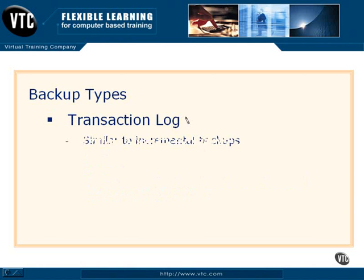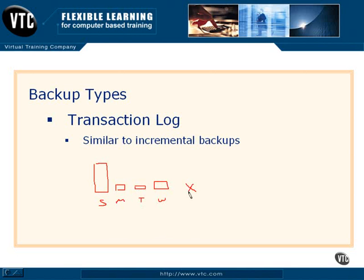The last backup type is the transaction log. This is similar to incremental backups because we're only getting what changed that particular day. If I do a full backup on Sunday night, then I do a transaction log of just what changed on Monday, then on Tuesday just what changed on Tuesday, then on Wednesday just what changed on Wednesday. If we have a failure on Thursday, we have to first restore the original full backup, then restore each one of the transaction log backups in order, replaying all the changes. Transaction logs are extremely fast to back up, but it's going to take a little longer to restore because you have to restore three files along with your full backup.